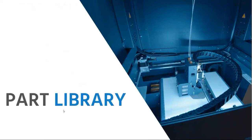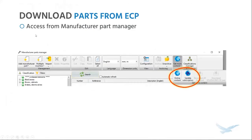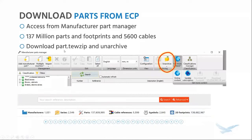One of the first things you would want to do after installing electrical is set up your manufacturer part library. Eventually that is what is going to generate your accurate bill of materials, accurate wire styles, et cetera. One of the first things I like to do is take a look at the electrical content portal and see what you can download from there. You can access the electrical content portal from the manufacturer part manager. There are about 137 million parts and almost the same number of footprints, and about 5,600 cables spread across a thousand manufacturers.